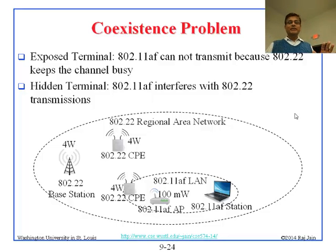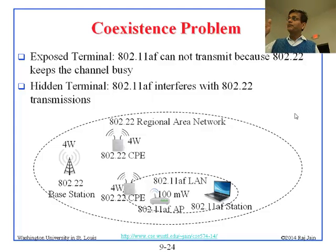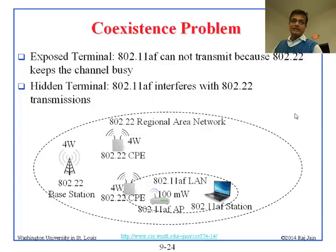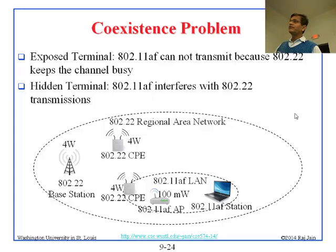There are several coexistence issues with 802.11af. There are many standards — 802.22, 802.15, 802.11, and so on — all wanting to use the same white space. The next set of standards addresses how to coexist with others. One problem is the exposed terminal: the other network makes so much noise that you cannot do useful transmission. The hidden terminal problem is that you might transmit something that affects one AP or station but not others, causing an undetected collision.